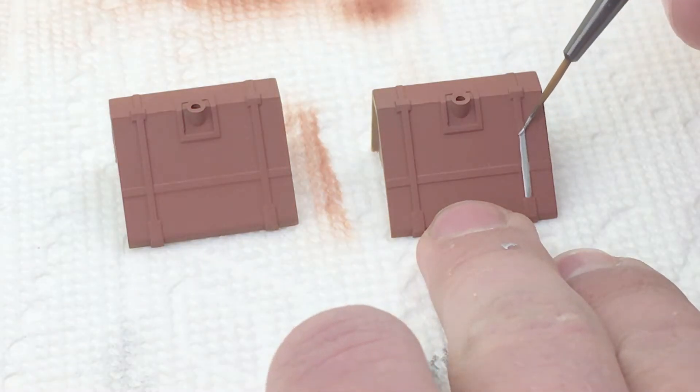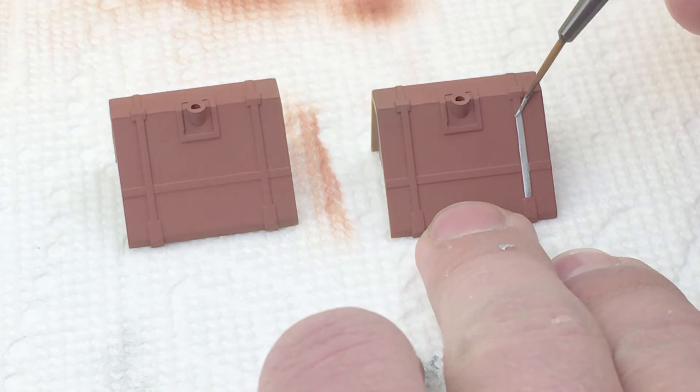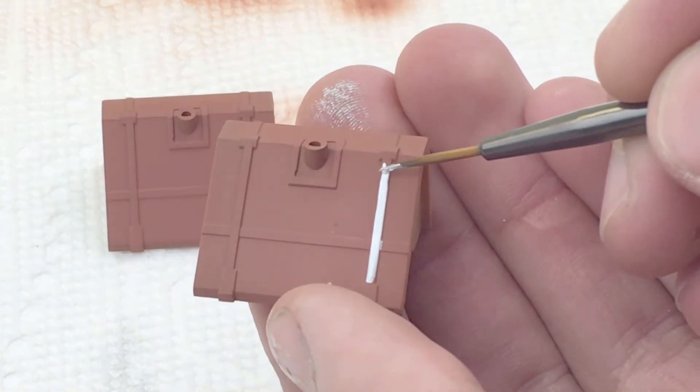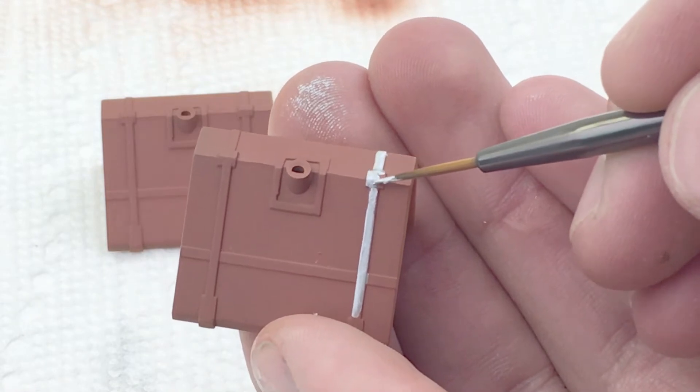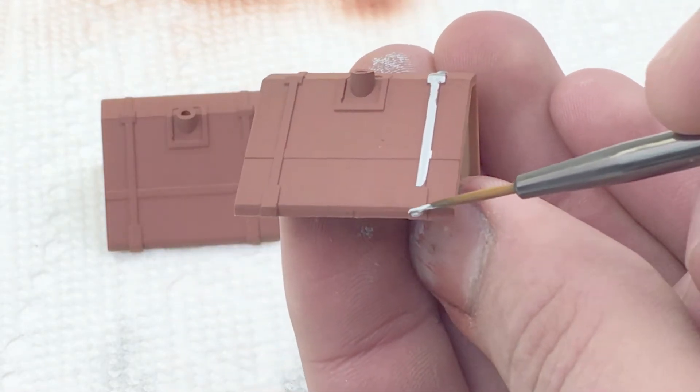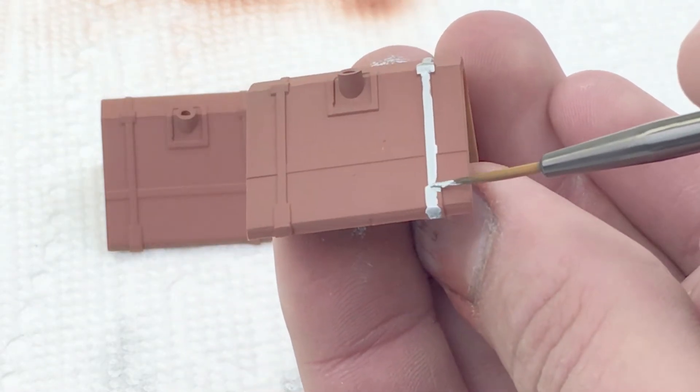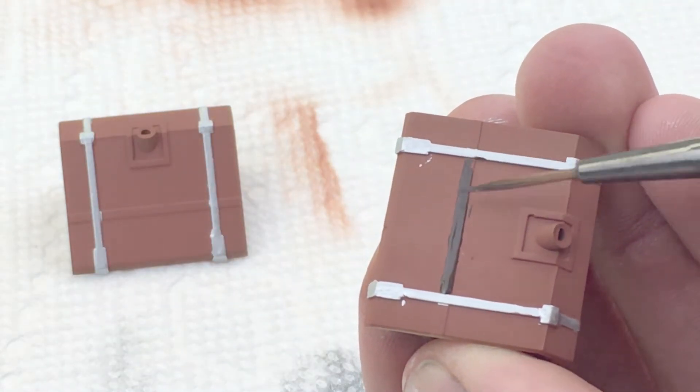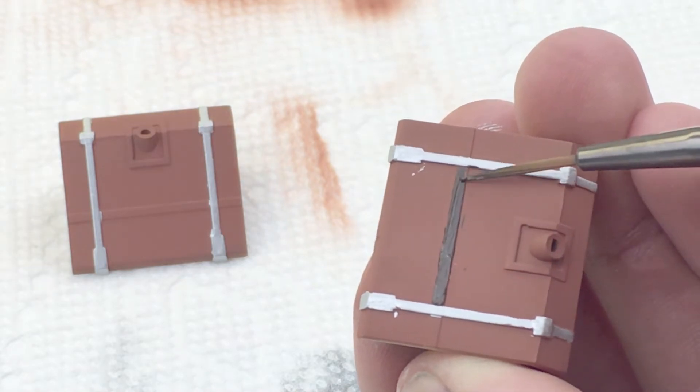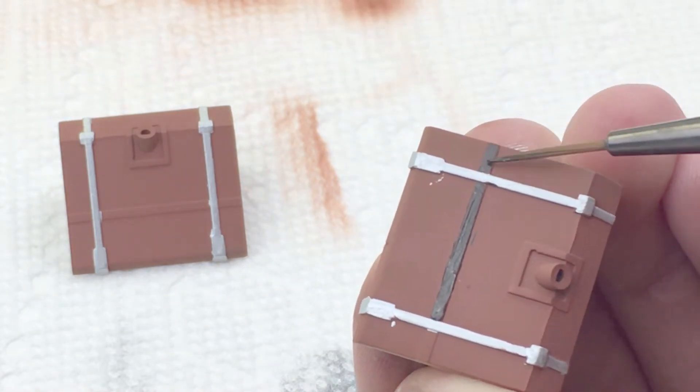I'm not really sure what color these straps should be, or even if they are straps, or just kind of bends in the metal. If anybody does know, please let me know. I'd love to hear what they actually are. I painted these ones silver, and then this one I painted in a kind of leathery color. I think it's German Camo Black Brown.